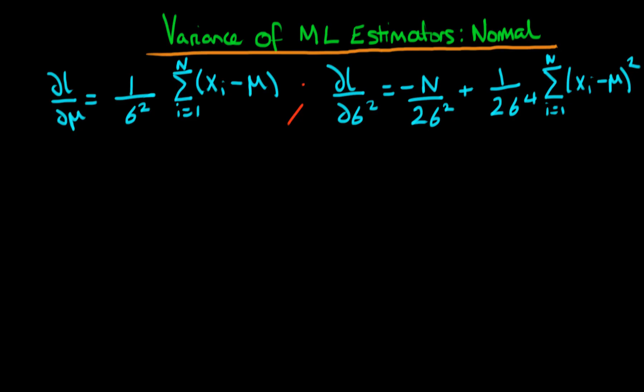In this video I want to talk about how we go about deriving the variance of maximum likelihood estimators. I'm going to talk about a specific example, which is the example we've been covering in the last few videos, which is that when we have an error which is itself normally distributed.